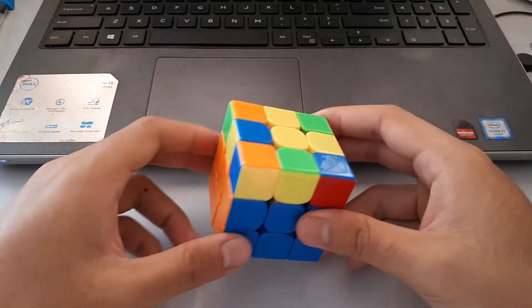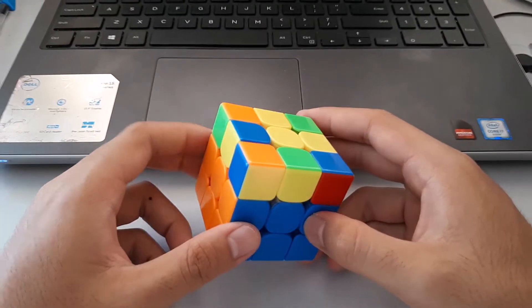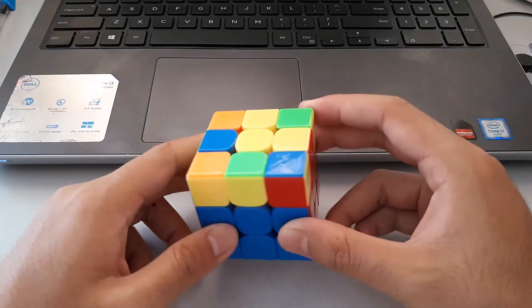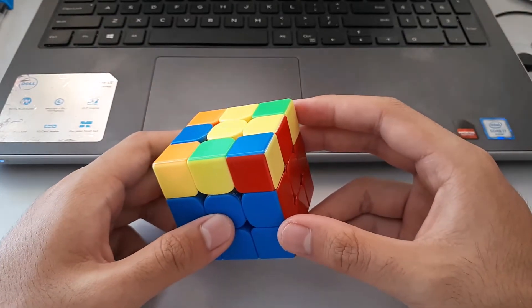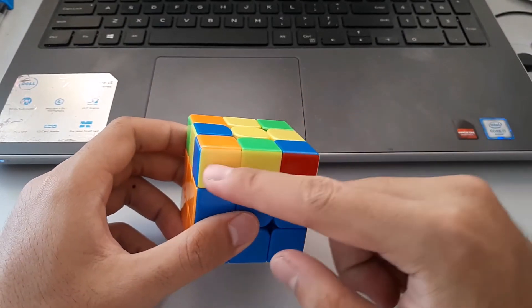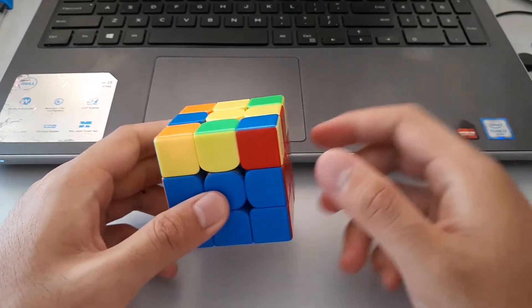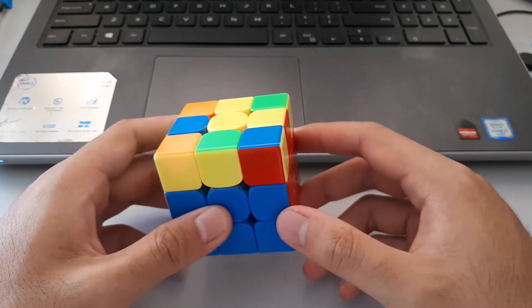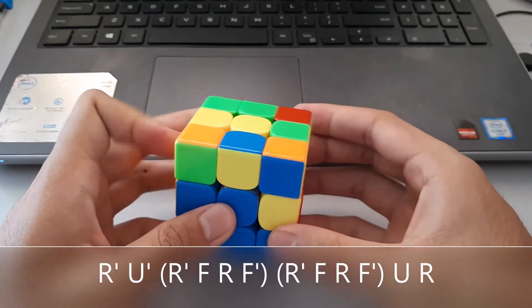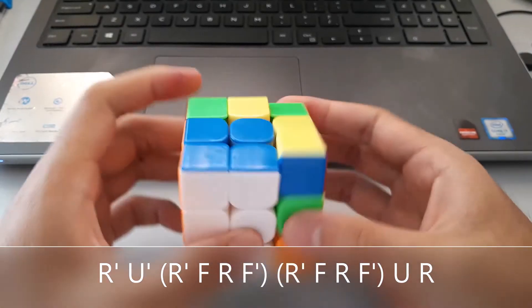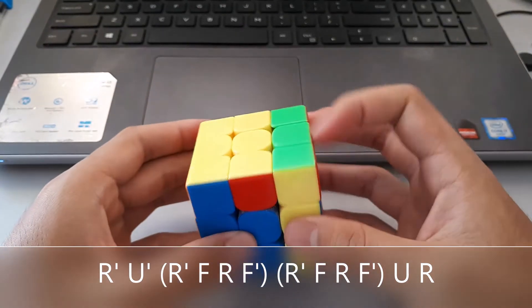However for the same case, if we're right handed, we could use a different algorithm for it. And it could ultimately be faster. So holding it, once again, the bar at the front and to the left, we could use our right hand and do R prime, U prime, and then 2 sledgehammers. And then finish off.